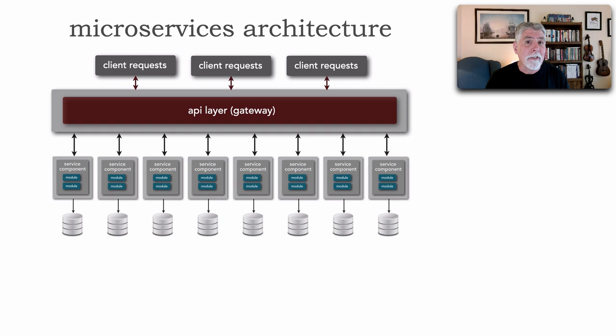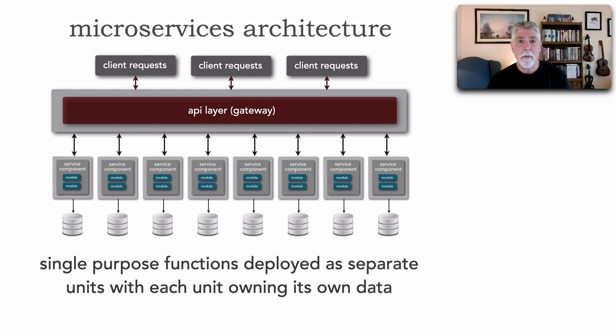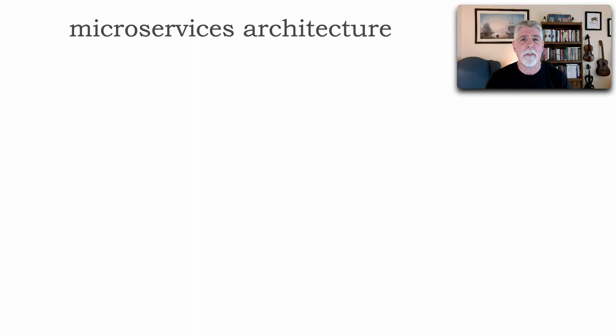Microservices architecture style is the newest and youngest architecture style out of all the ones we're going to be looking at. As of the date of this recording, it's really only been popularized and coined in about the past 10, 11 years. But microservices can be best described as single-purpose functions deployed as separate units of software with each owning its own data. And that's the overall shape of what microservices architecture is all about.